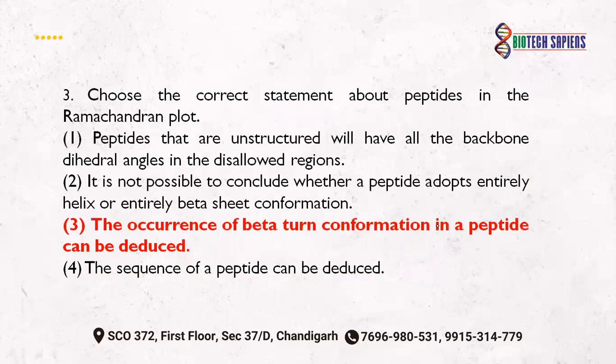The third question: choose the correct statement about peptides in the Ramachandran plot. The first statement says that peptides that are unstructured will have all their backbone dihedral angles in the disallowed regions. This statement is wrong — unstructured peptides do not necessarily have all angles in disallowed regions.